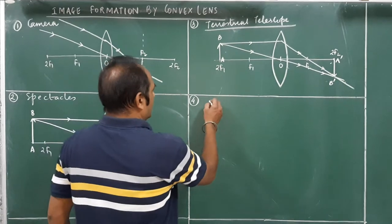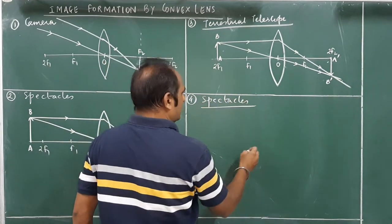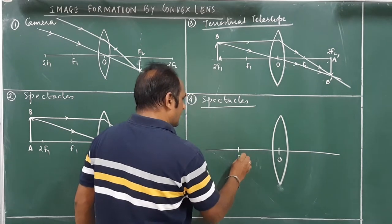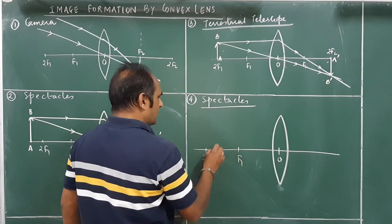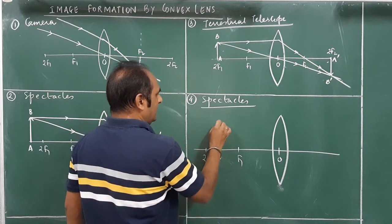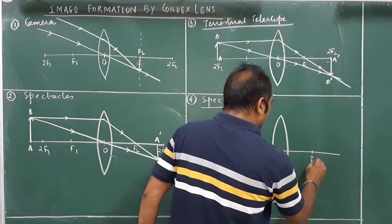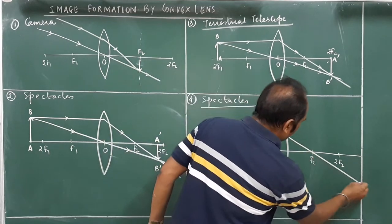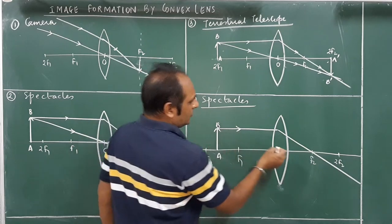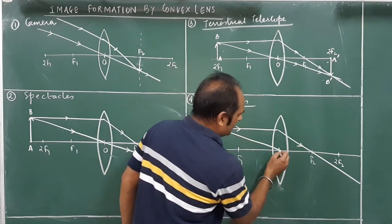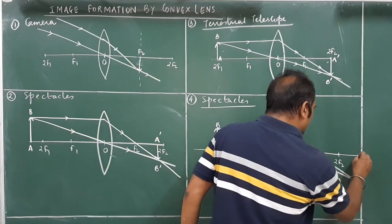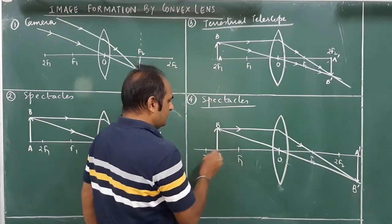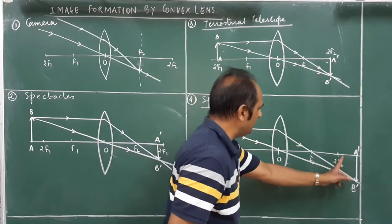Next is another case where the lens can be used in spectacles. We have a convex lens with f1 and 2f1 marked. Now the object is placed closer to the lens, between f1 and 2f1. In that case, the image is formed beyond 2f2. A ray parallel to the principal axis passes through the focus, and another ray through the optical centre goes undeviated. Both rays meet at a point beyond 2f2.